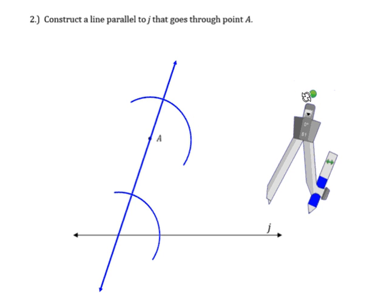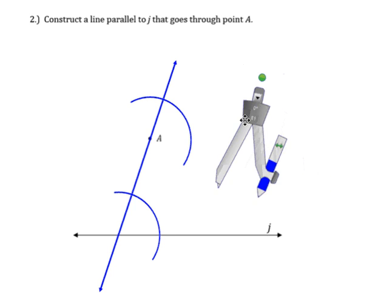The next thing we do when we copy an angle is we place the end of the compass where the arc intersects one line and the hole where the arc intersects the other line. I'm just going to take the compass.